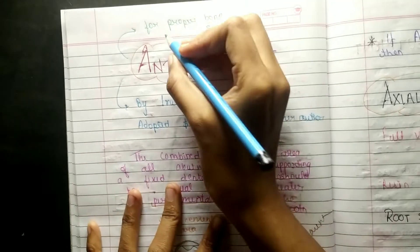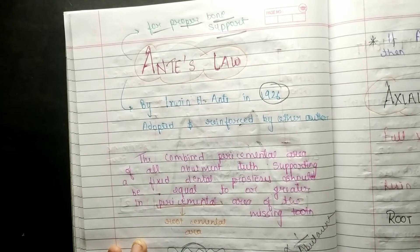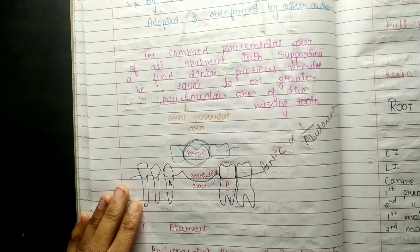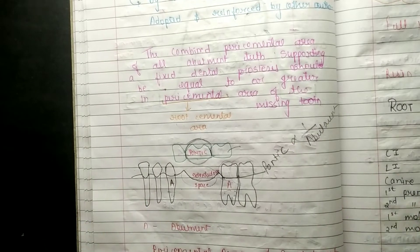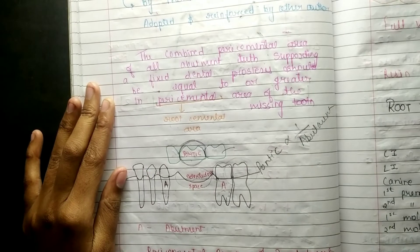Basically it is for proper bone support. First of all, the bone support is about abutment because it is the only one who provides support for any FPD. So what is Ante's Law?